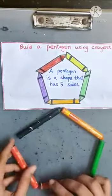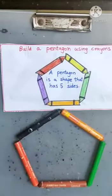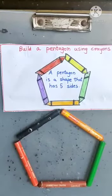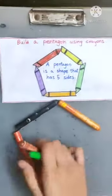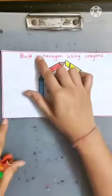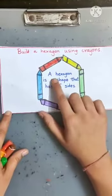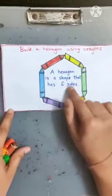And fifth one like this, and here is my pentagon ready. Now let us look at this second card. Build a hexagon using crayons. What is a hexagon? A hexagon is a shape that has six sides.